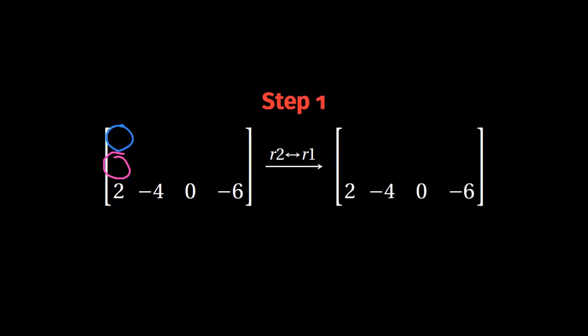So at the end, what we have done is to interchange row one and row two without touching row three. Now the second step. We first start with the matrix that we obtained in step one.